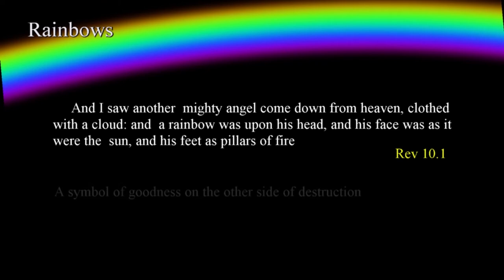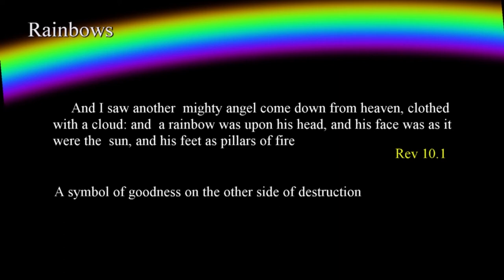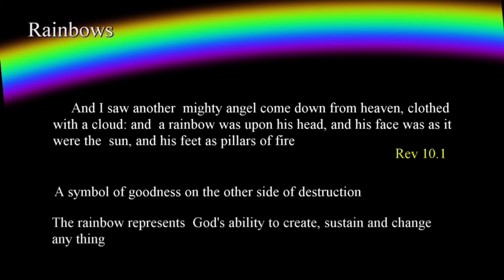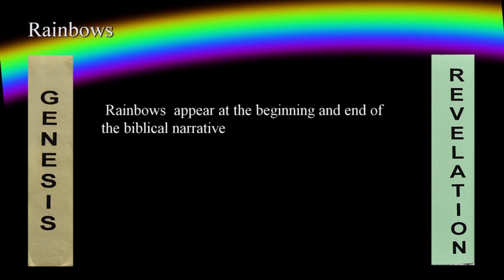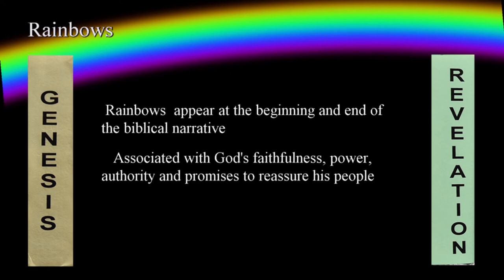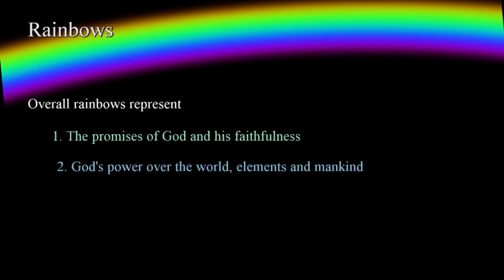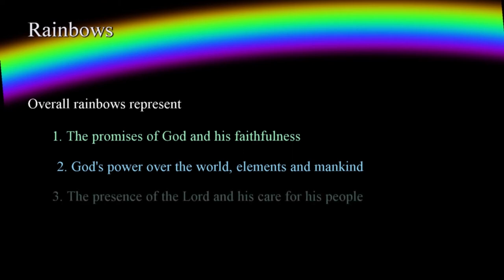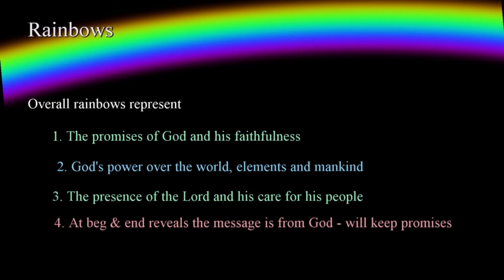The interesting thing about the rainbow is that it's a symbol of goodness on the other side of destruction. The only way that we'll see the throne of God or be in his presence is by obeying him through the commands in his word. The rainbow reminds us of his presence and therefore tells us that we're never far from him, although we might feel isolated and scared. The rainbow represents God's ability to create, sustain, and change anything. Another interesting fact is that rainbows appear at the beginning and end of the biblical narrative. It's a figure associated with God's faithfulness, power, authority, and promises to reassure his people. Overall, rainbows represent the promises of God and his faithfulness, God's power over the world, elements, and mankind, and the presence of the Lord — located at the beginning and end of the revealed word, denoting that the message is from God and that he'll keep the promises he's made.